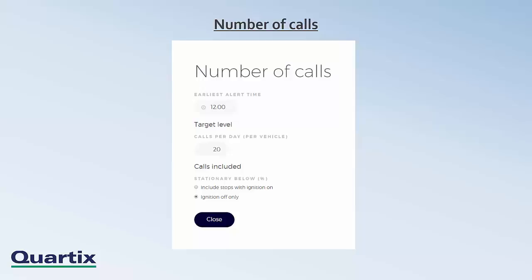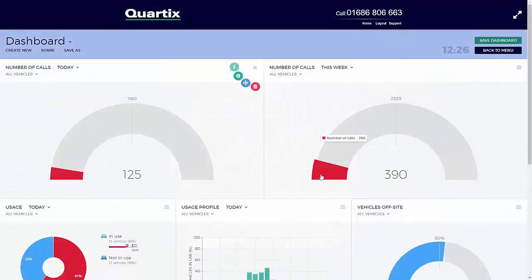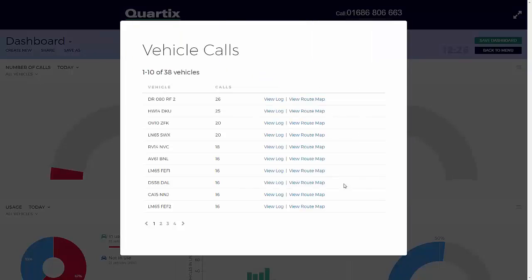The earliest start time is the earliest time at which the alert will be displayed — this will avoid having alerts at the start of the day when all vehicles will be below target. The target level is the target number of calls per vehicle in a day, and the calls included are stops with ignition on and with ignition off only. There is a list of calls per vehicle available displayed in ascending order of number of calls, and this list contains a link to the daily log and route map for each vehicle.